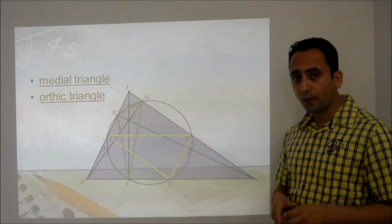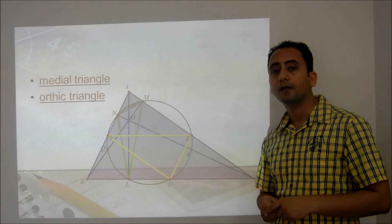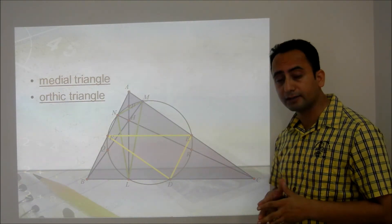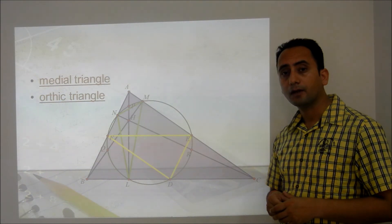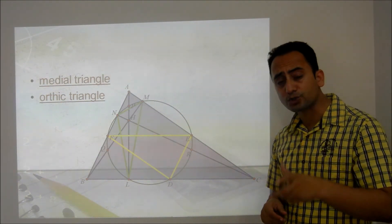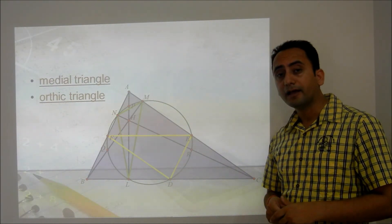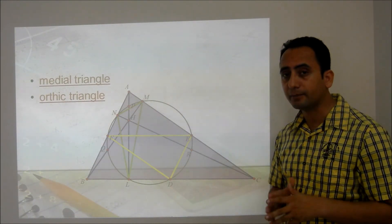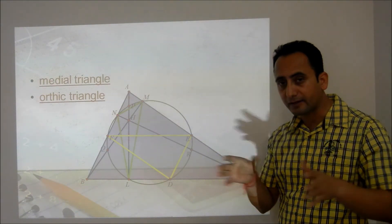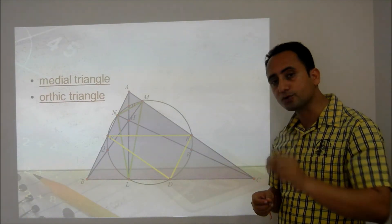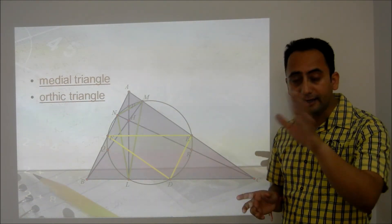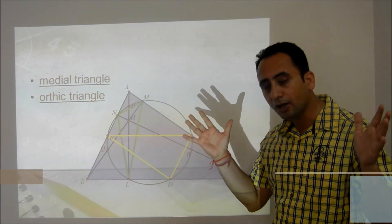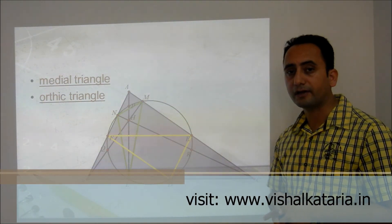Before finishing, an important note: do we always get 9 distinct points in any arbitrary triangle? The answer is no. In an equilateral triangle, an isosceles triangle, or a right-angle triangle, you may not always get 9 distinct points because certain points will coincide. For example, in an equilateral triangle, the feet of the altitudes coincide with the midpoints of the sides. But we can still draw a 9-point circle in every triangle.